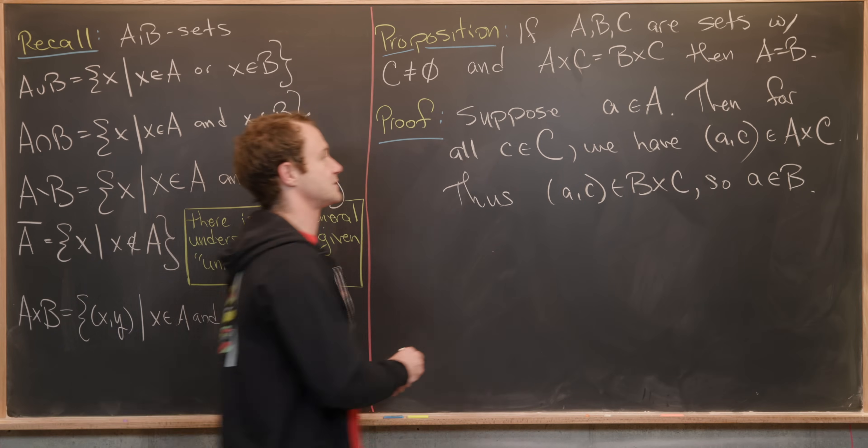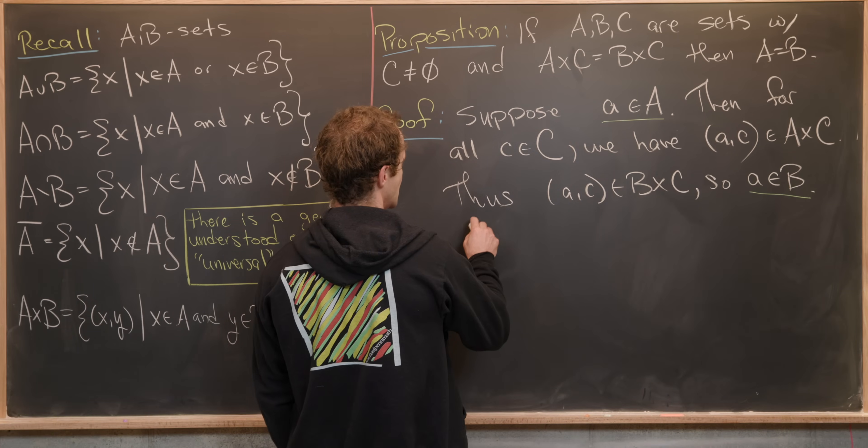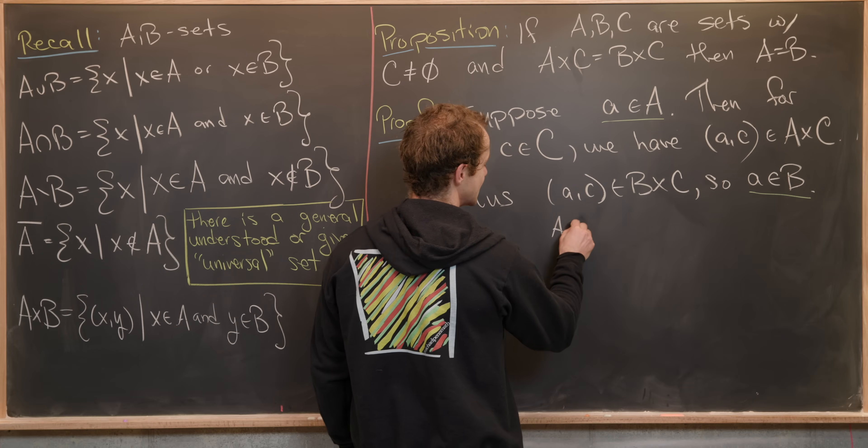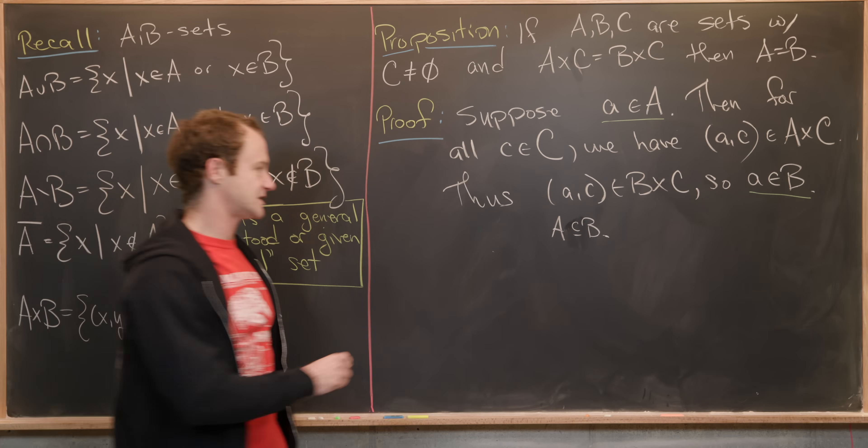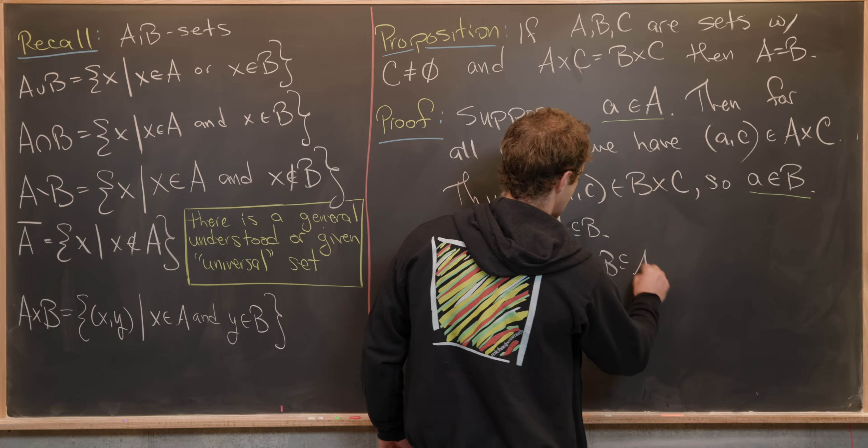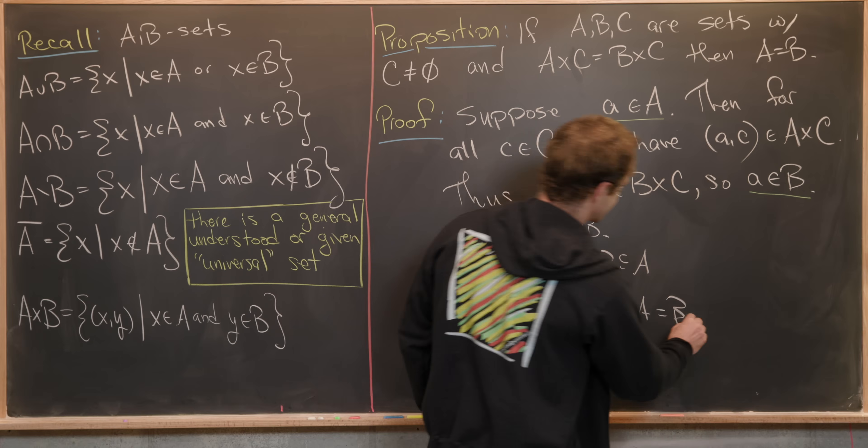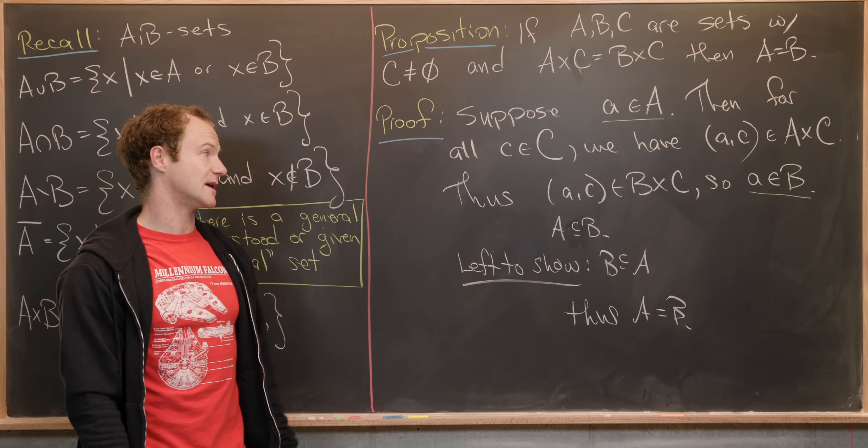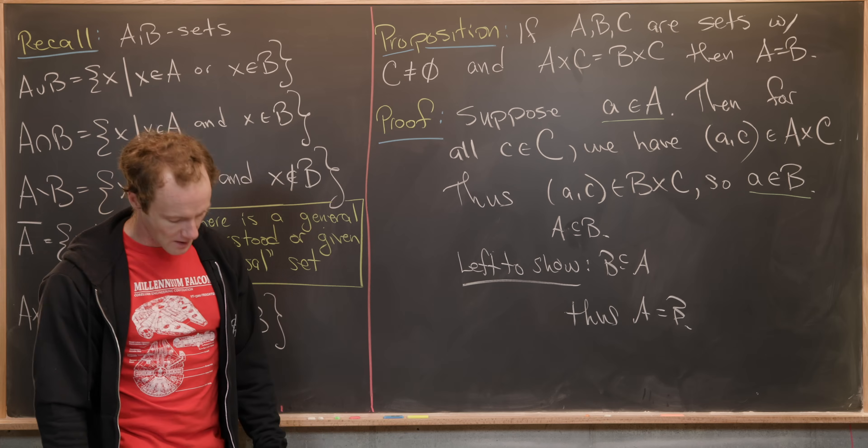So check it out. Starting with this statement and ending with this statement proves that A is a subset of B. And now what's left to show is that B is a subset of A. Thus, putting those together, we get A equals B. I'll actually let you guys show that B is a subset of A. You essentially do the same thing that we did in this proof right here.